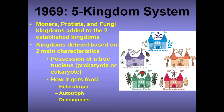In 1969, the five kingdom system was established. Monera, Protista, and Fungi kingdoms were added to the two established kingdoms. Kingdoms are defined based on two main characteristics: possession of a true nucleus — whether prokaryote or eukaryote — and how the organism gets food, whether it's heterotrophic, autotrophic, or a decomposer. Heterotrophs depend on other organisms for food, autotrophs like plants make their own food, and decomposers feed on dead and decayed remains of organisms.